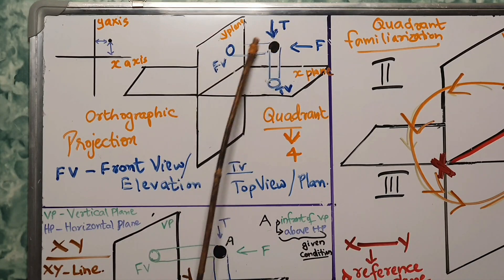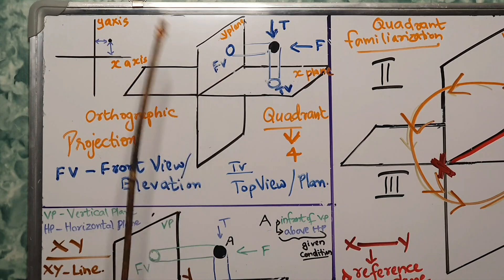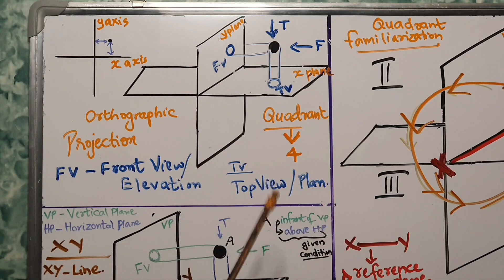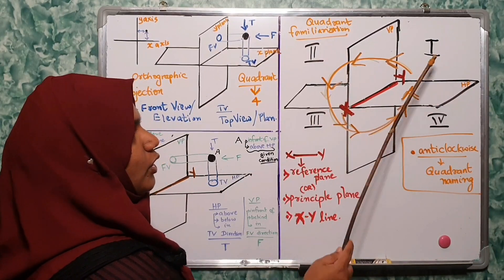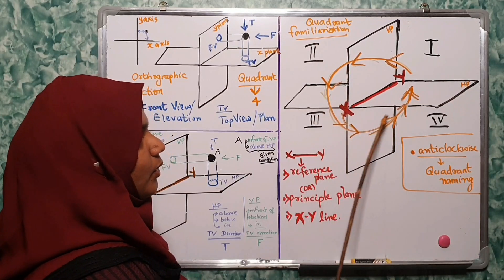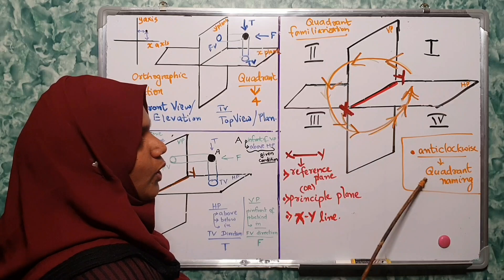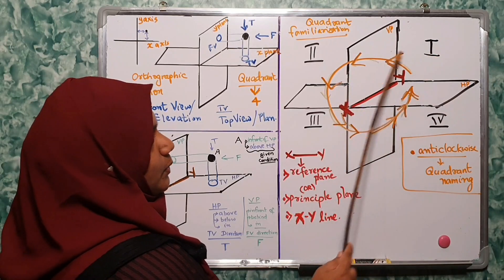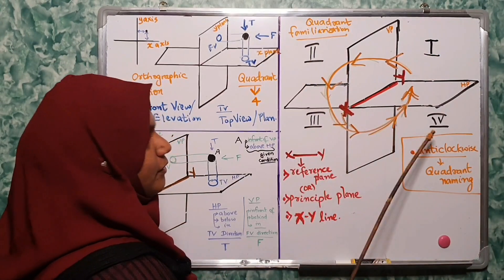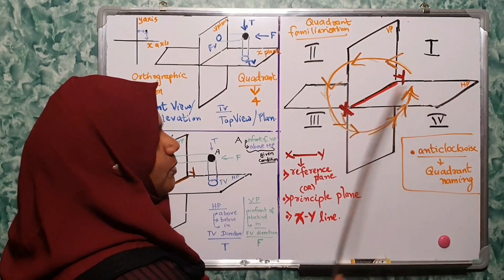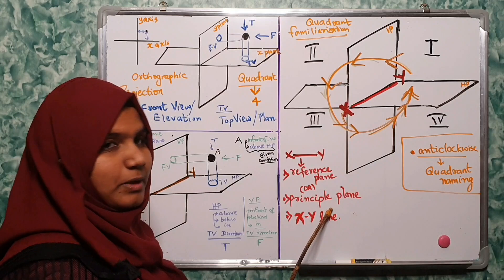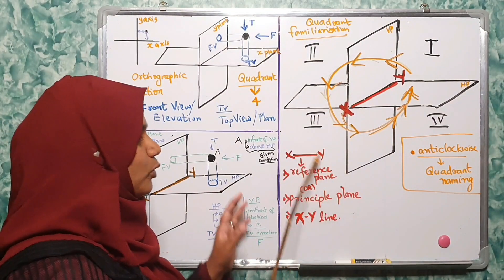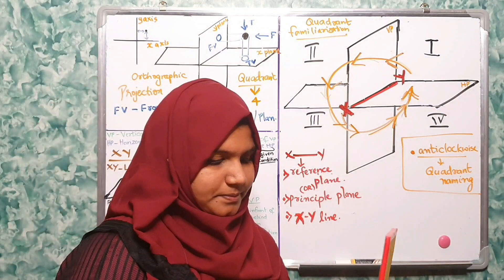The views that we represent are the objective of the object — this is the orthographic projection. There are four quadrants, numbered in an anti-clockwise manner. The first quadrant is here, second, third, fourth. This is the intersection of the VP and HP. The XY line is the reference plane, also called the principle plane. These three names — VP, HP, and XY line — are used in the examination.